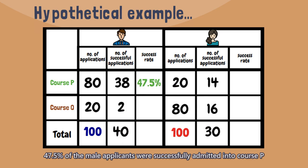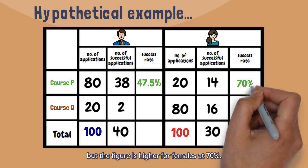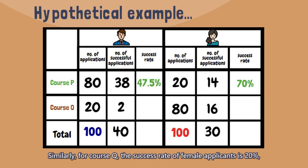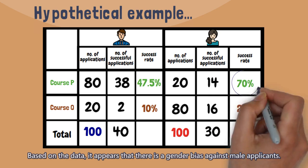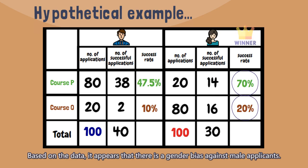47.5% of the male applicants were successfully admitted into Course P, but the figure is higher for females at 70%. Similarly, for Course Q, the success rate of female applicants is 20%, which is twice that of male applicants. Based on the data, it appears that there is a gender bias against male applicants.